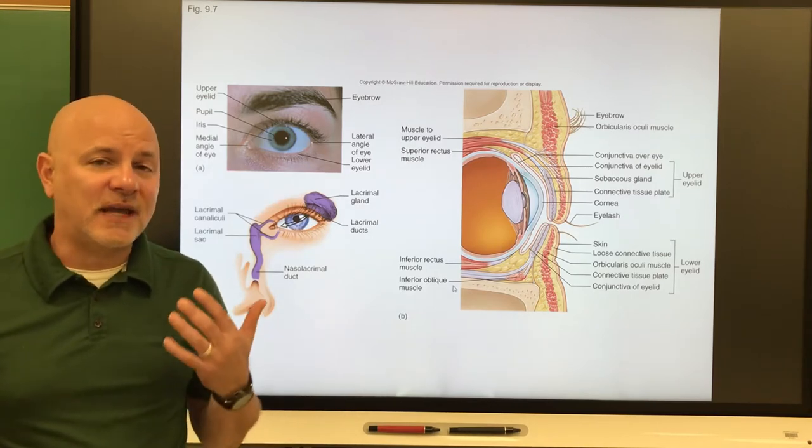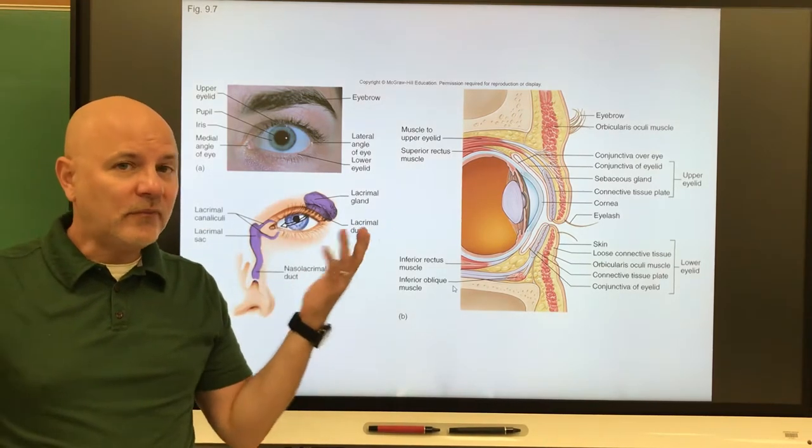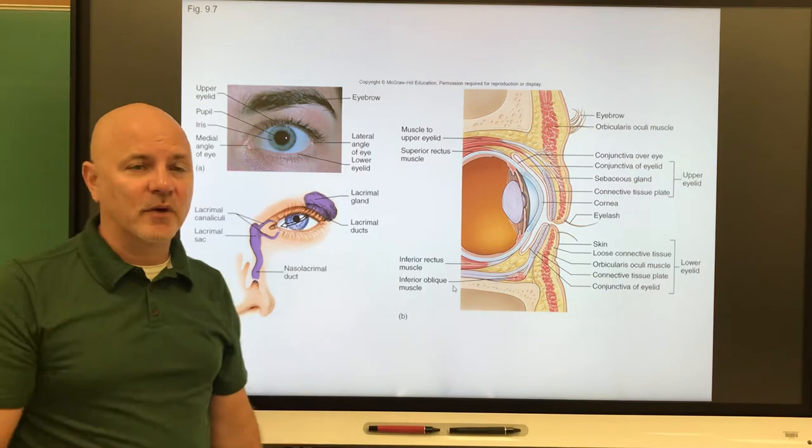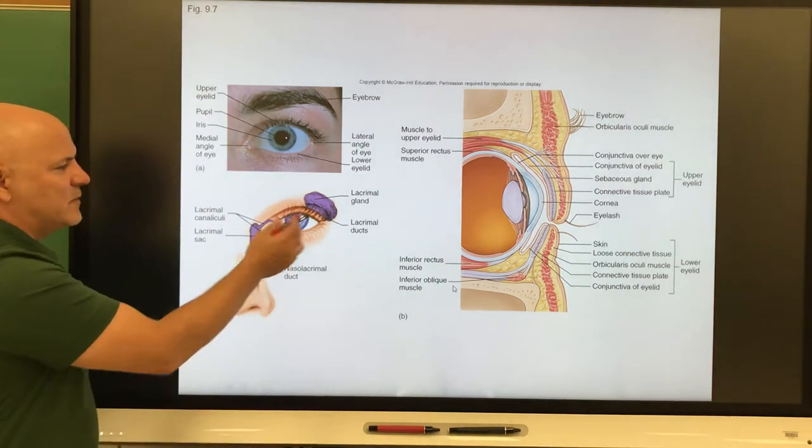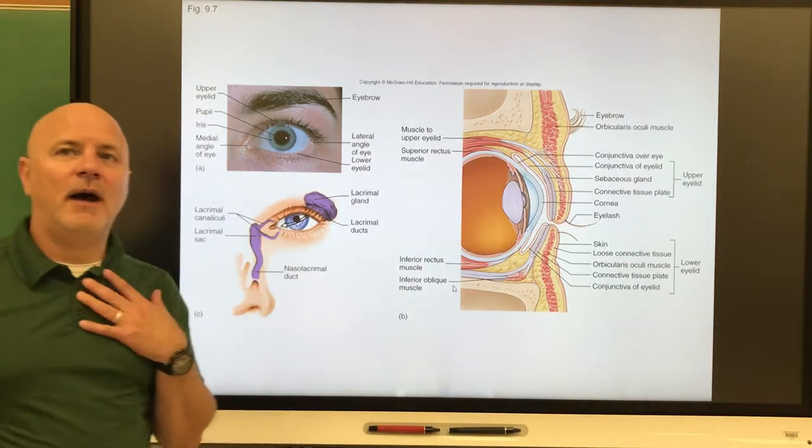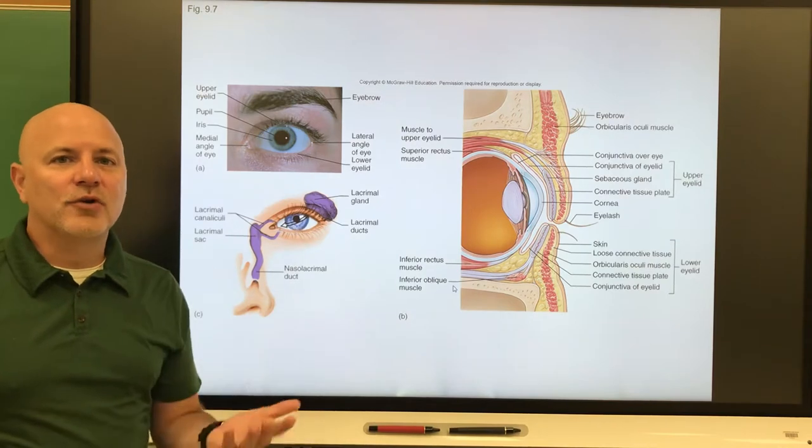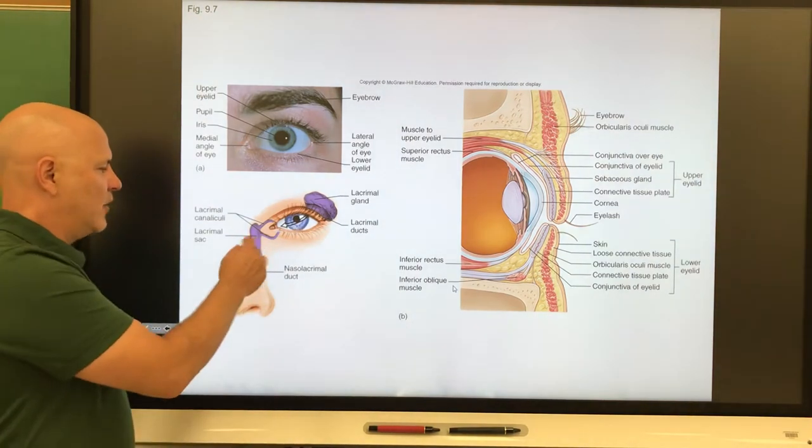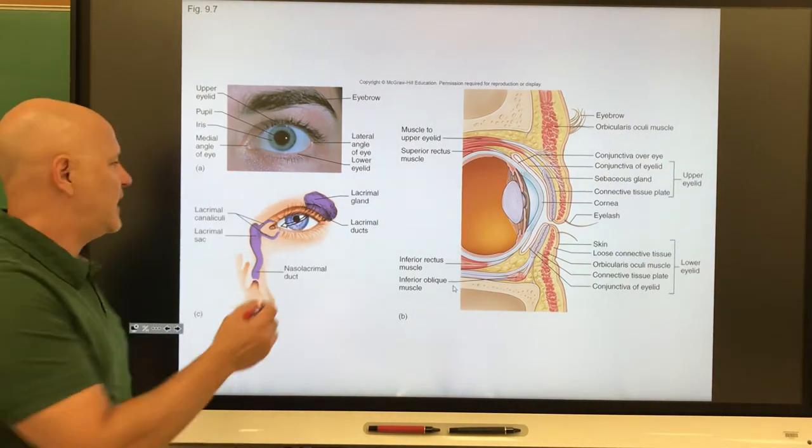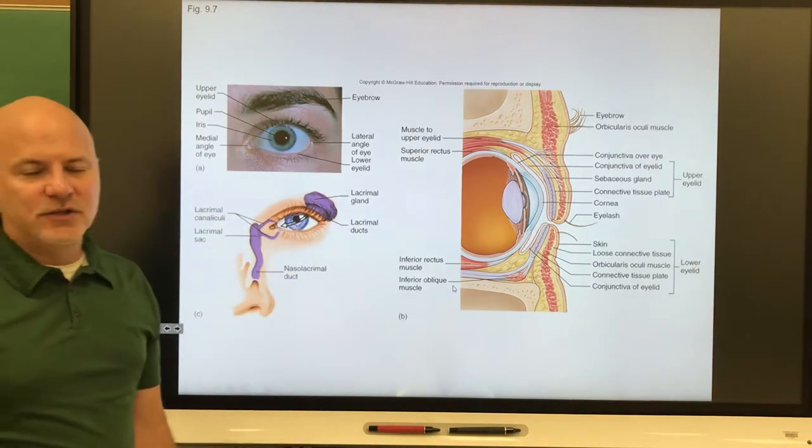We constantly produce tears. They constantly wash over our eyes and constantly drain into our nasal cavity. From the nasal cavity they move to our pharynx, and I just swallowed some tears along with some mucus. This is why when you cry, your nose gets stuffy as well, due to all the tears being drained into your nasal cavity.